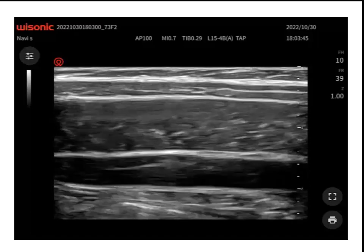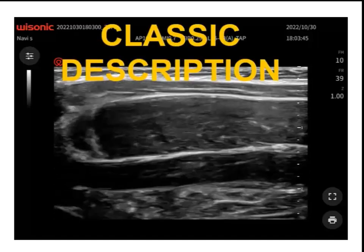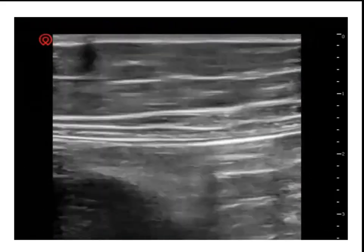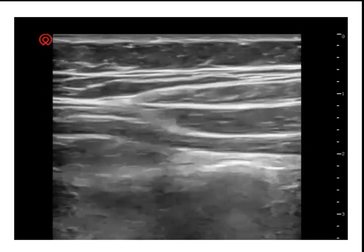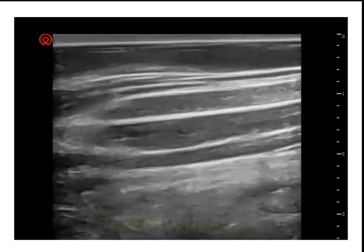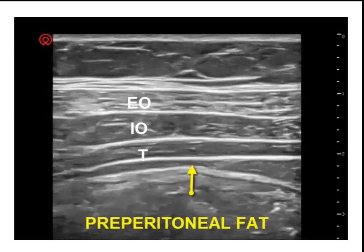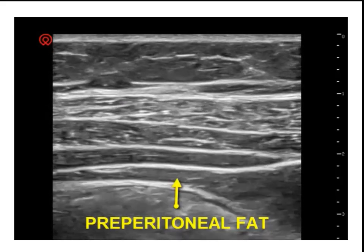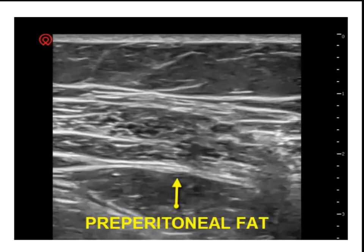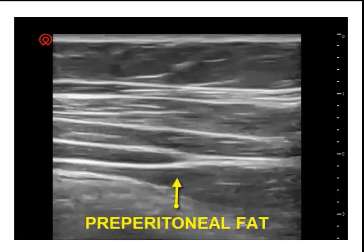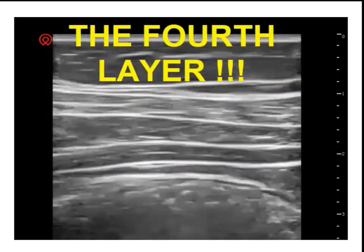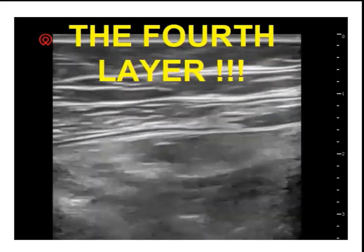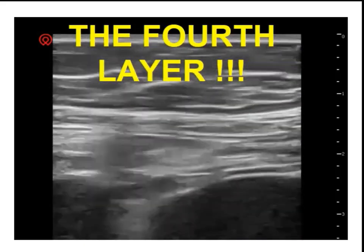Classic descriptions of the abdominal wall layers call for identification of three layers. However, in many patients a fourth layer is visible laterally: the preperitoneal fat. In more posterior scans and in obese patients, the preperitoneal fat layer can be prominent and identified as an abdominal wall layer. This layer can be confused with the transversus abdominis muscle layer.